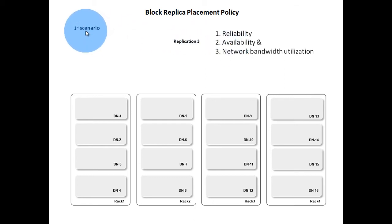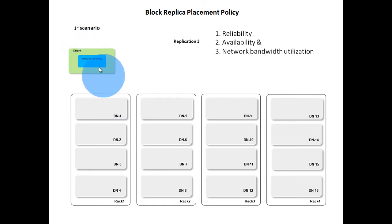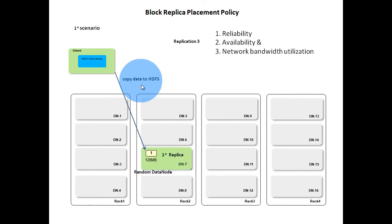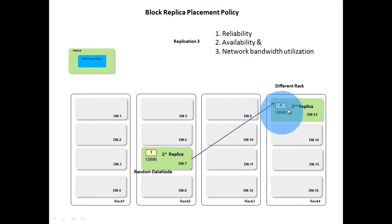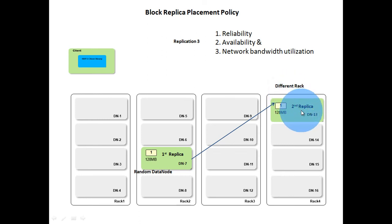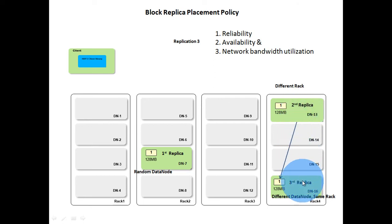The first scenario is when data is written from outside world into HDFS cluster — for example, copying data from a local system to HDFS. In this scenario, a data node is chosen randomly to store the first replica. In our case it is data node 7 of rack 2. The second replica is stored on a different data node in a different rack — data node 13 of rack 4. The third replica is stored on a different data node in the same rack — data node 16 of rack 4.